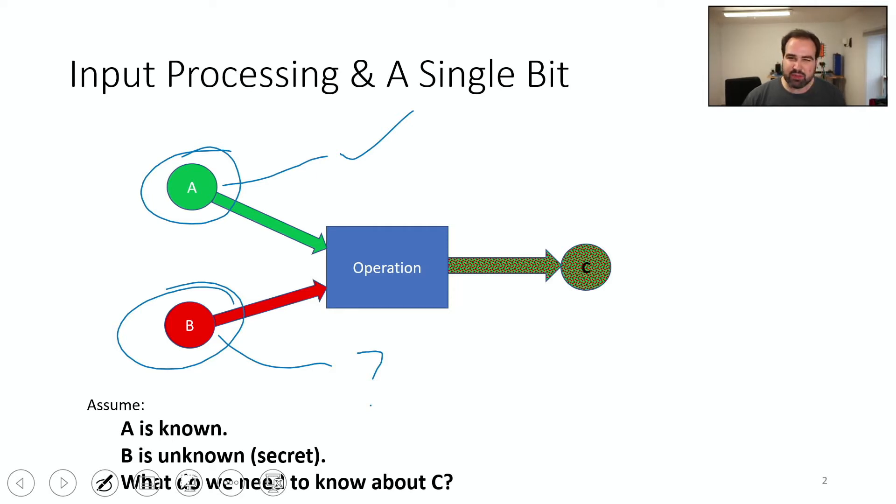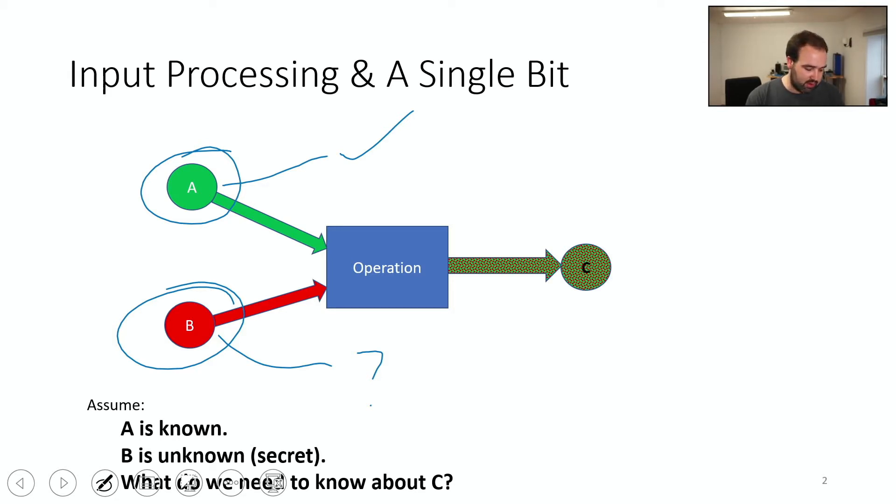Now, it might be a lot to assume we know everything about C. And so this is the case for these algorithms. They're designed to hide C. But what if we learn a little bit about C? What if we learn some bits of C or something like that? And so that's where these attacks go in. So let's dive into that operation.